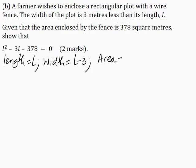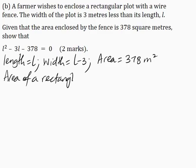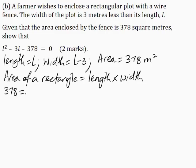The area enclosed by the fence is 378 square meters. The farmer wishes to enclose a rectangular plot, and we know that the area of a rectangle is length multiplied by width. Substituting these values into the equation: 378 is equal to L multiplied by (L minus 3).